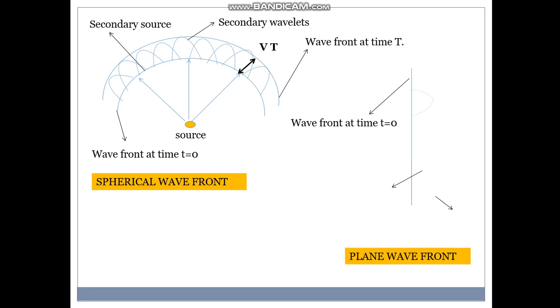Similarly, for a plane wave front, we have got these as the wavelengths. Again, the radius is ct. So these are the secondary wavelengths. That's the secondary wave front. And the radius is v into t, the velocity into time.